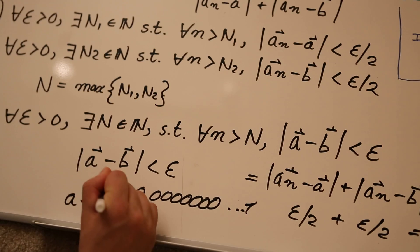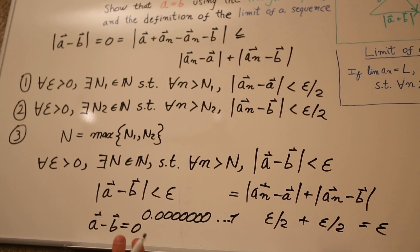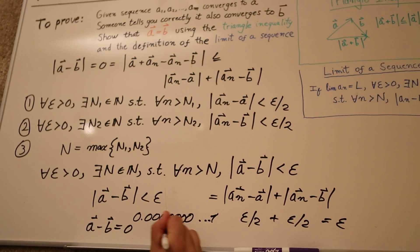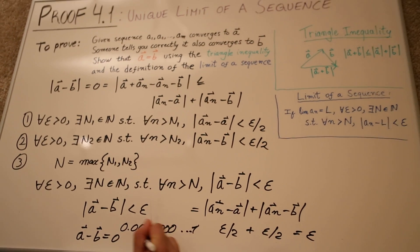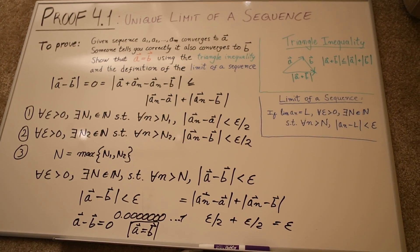A minus B is zero, which means A is equal to B. And we're done with proof. That's it, guys. Thanks for watching.